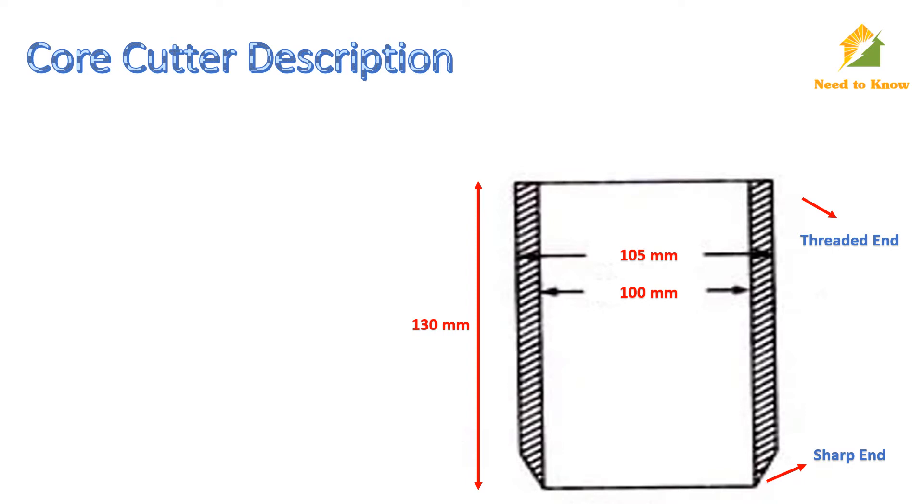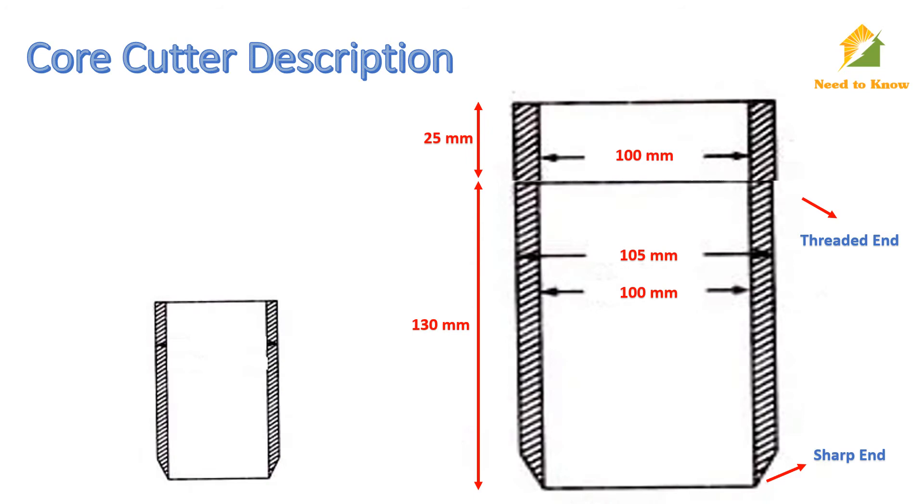Steel dolly or collar is screwed at the threaded end of the core. Steel dolly internal diameter is 100 mm and height is 25 mm. The whole assembly is penetrated by steel rammer of mass 9 kg. Overall length with the foot and staff is about 900 mm.